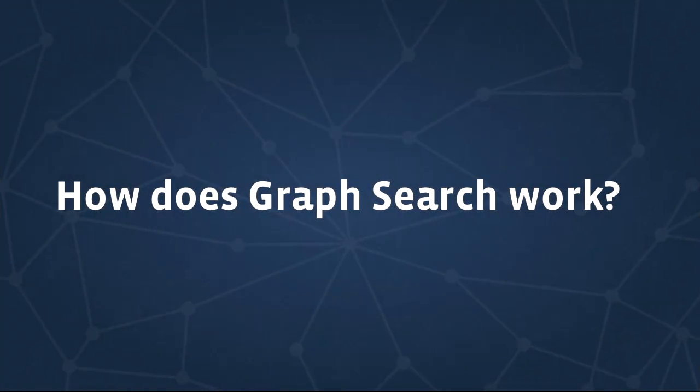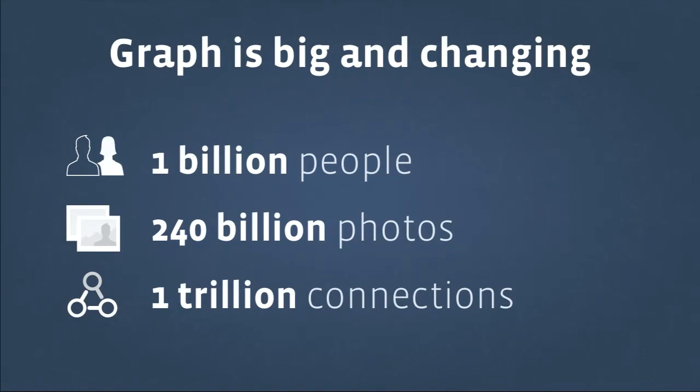So what is Graph Search? Graph Search is not Web Search — we're not indexing the Web here, we're indexing our map of the graph. The graph is really big and constantly changing: there are more than a billion people in this map with almost a million new ones every day, more than 200 billion photos with hundreds of millions of new ones every day.